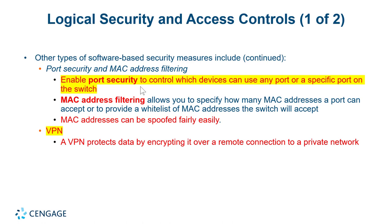Port security ensures no unauthorized devices are plugged into corporate switches — it can say only this MAC address for this network card on this laptop is allowed on this switch. If a different or new MAC address shows up, it shuts that port down. At NASA, the flight control network allows only authorized devices looking at data from the space station. If a non-blessed device is plugged in, it instantly causes a security violation, the port is shut down, and people come looking for you — because unauthorized devices could bring malware onto a network that could compromise command and control of the space station.